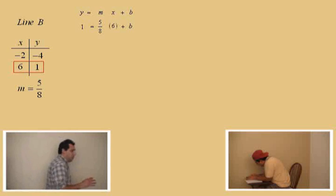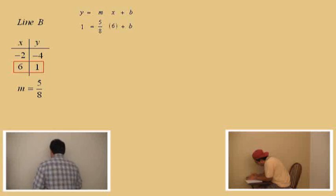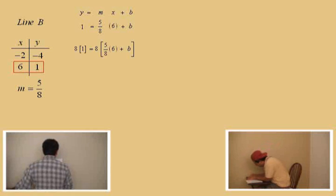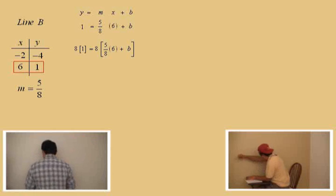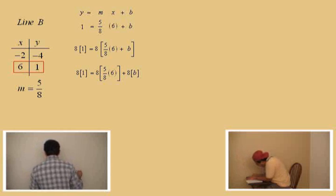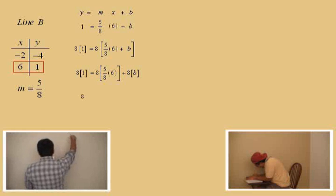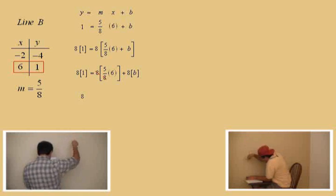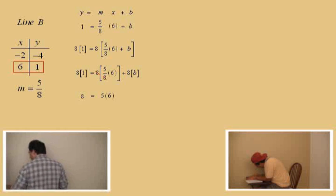Remember, our goal in this approach is to solve for the b value. Once we get b, we can write out our equation of the line. We've got to clear that fraction — the 8. So we multiply both sides by 8, and then you have to distribute on the right-hand side. Left-hand side, what do you end up with? 8. On the right side, those two eighths cancel, leaving you with 5 times 6, and then plus 8b. What's 5 times 6? 30. So we have 8 equals 30 plus 8b.